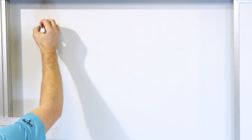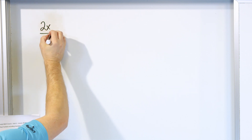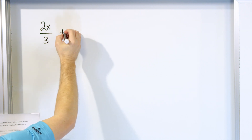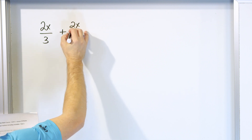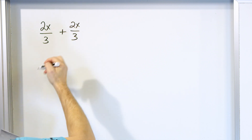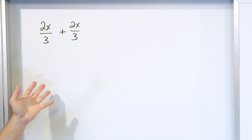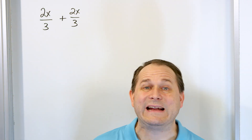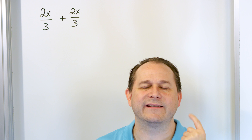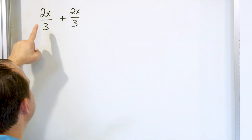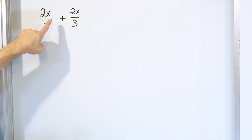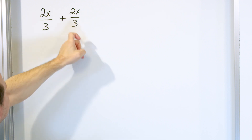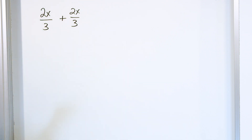Let me show you how easy something like this is. Let's say I give you the fraction 2x over three, and I'm going to add that to another fraction, which is also 2x over three. Remember, x is a variable — it can represent anything. If I pick a value of x equal to one, then this fraction becomes two-thirds plus two-thirds, because two times one is two. Two-thirds plus two-thirds — we know how to add those.